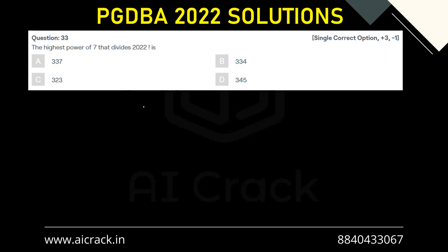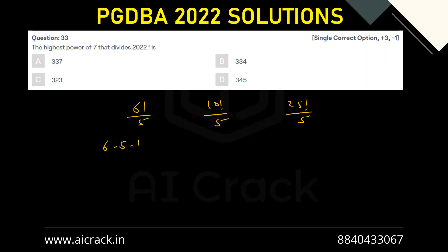Let's take some examples first: 6 factorial divided by 5, 10 factorial divided by 5, and 25 factorial divided by 5. In the case of 6 factorial, we can write it as 6·5·4·...·1 divided by 5. We can clearly see that the highest power of 5 in this factorial is just 1.